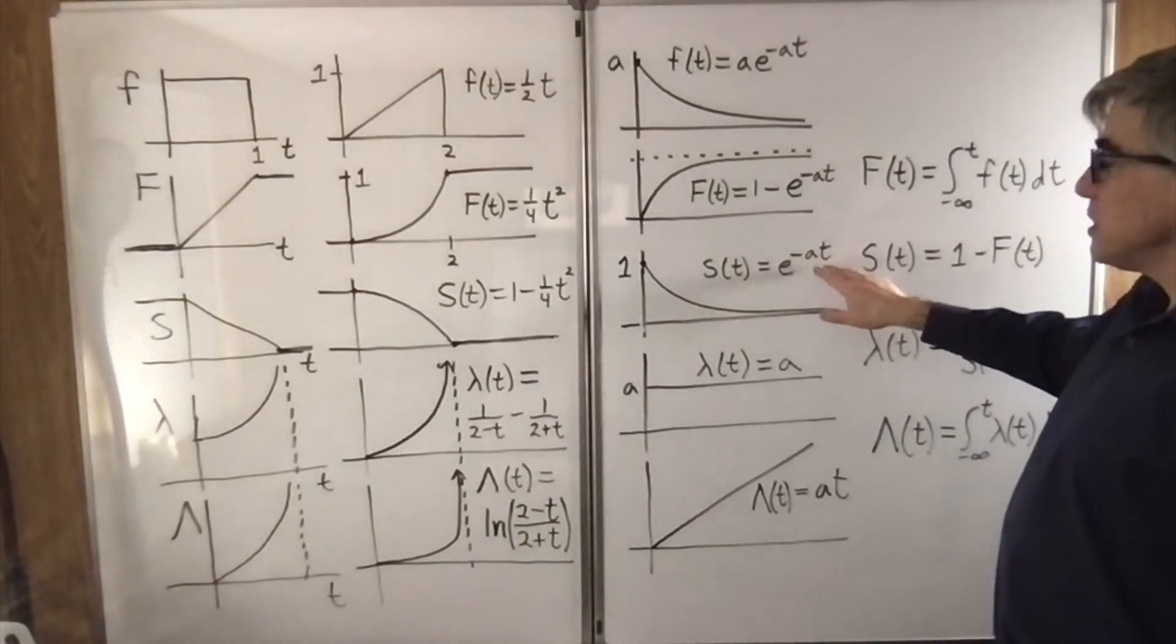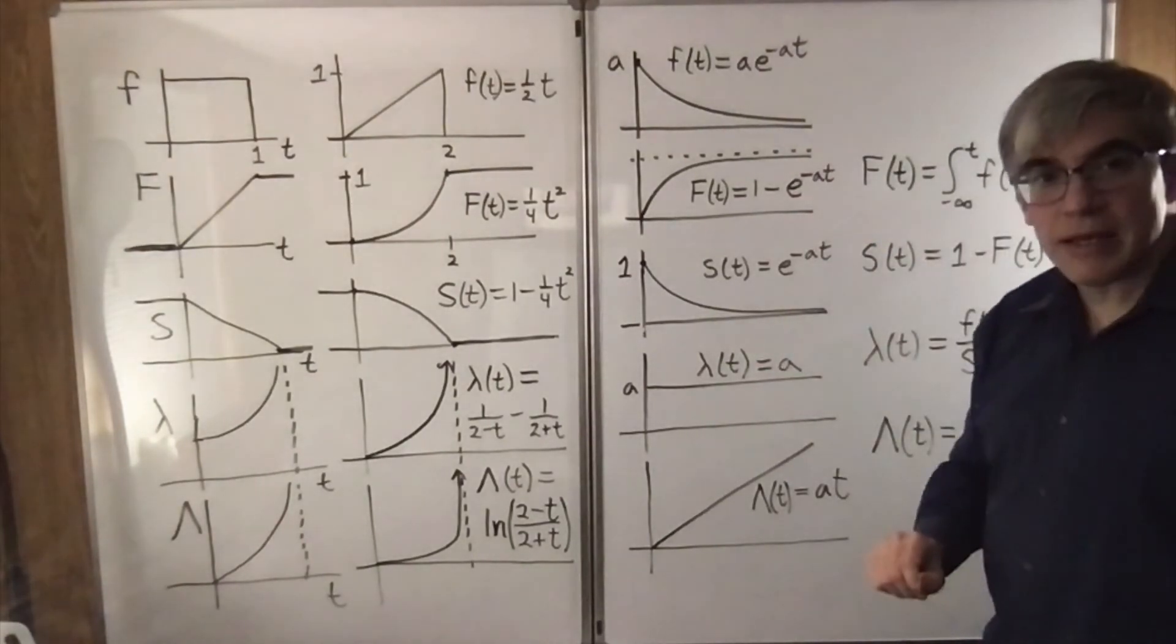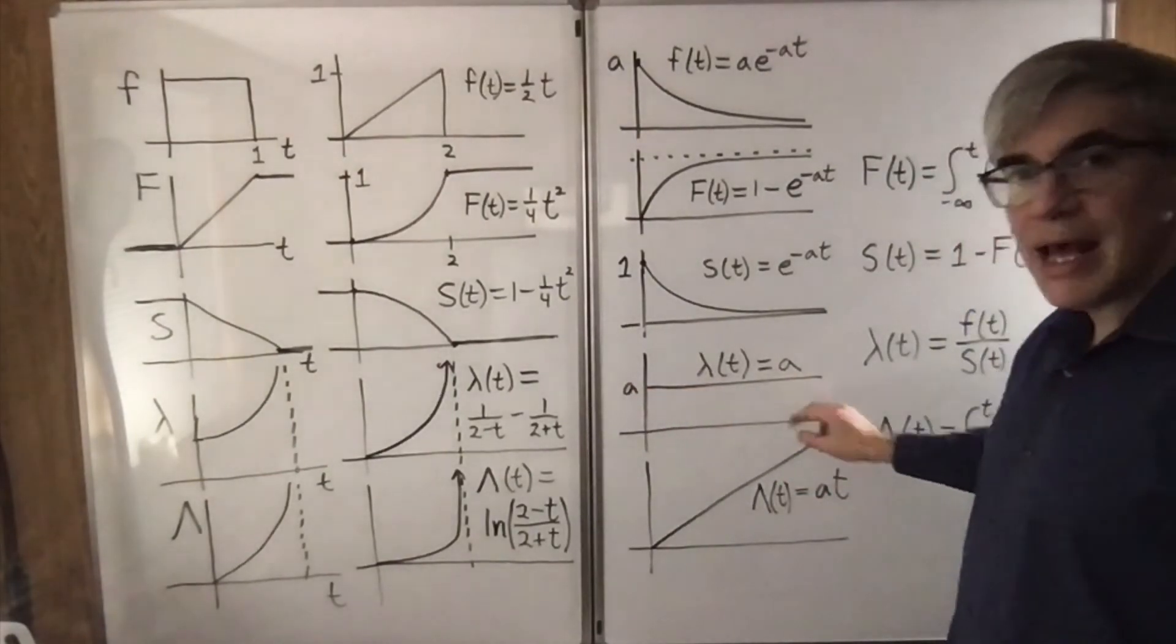But an interesting thing happens when you divide f of T by S of T: everything cancels except a. An exponential is the only function that has a constant hazard rate.